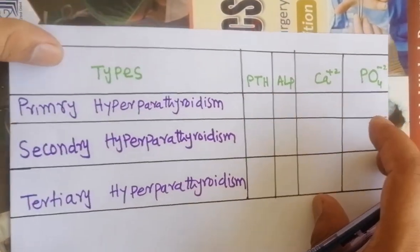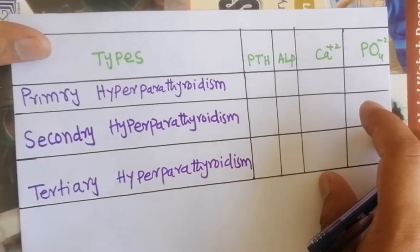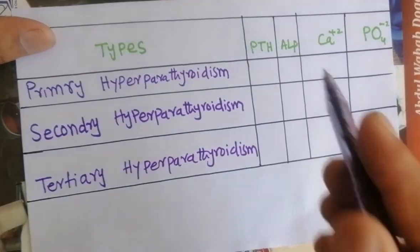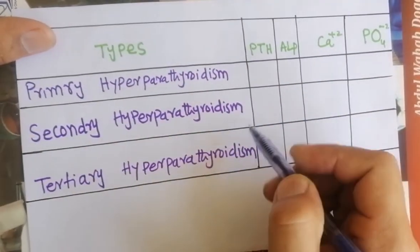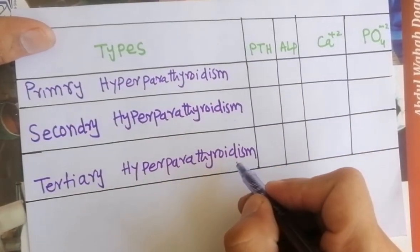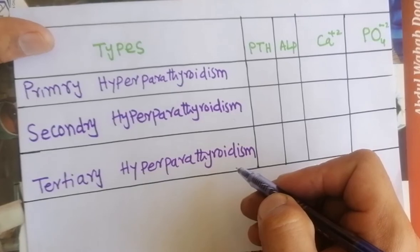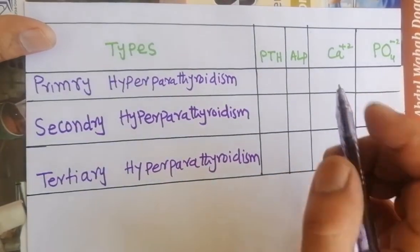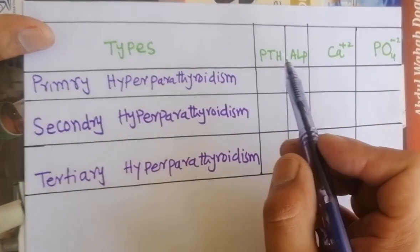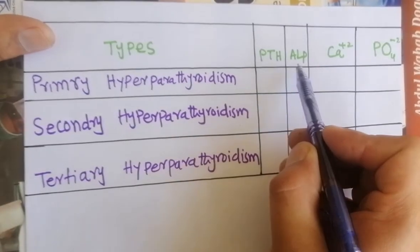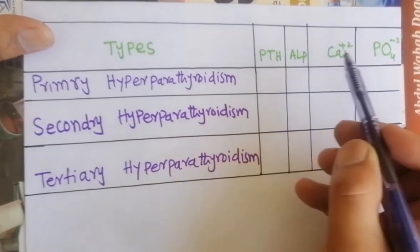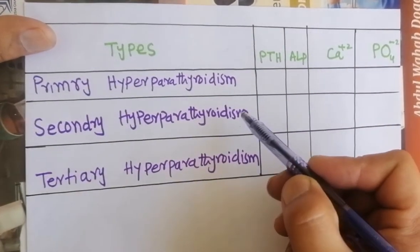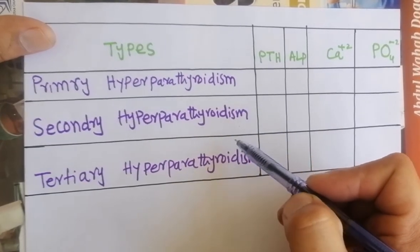Hi guys. In this video I will simplify primary hyperparathyroidism, secondary hyperparathyroidism, and tertiary hyperparathyroidism lab values. You have to fill this table — that is PTH, ALP, calcium level, and phosphate level in these hyperparathyroidisms.